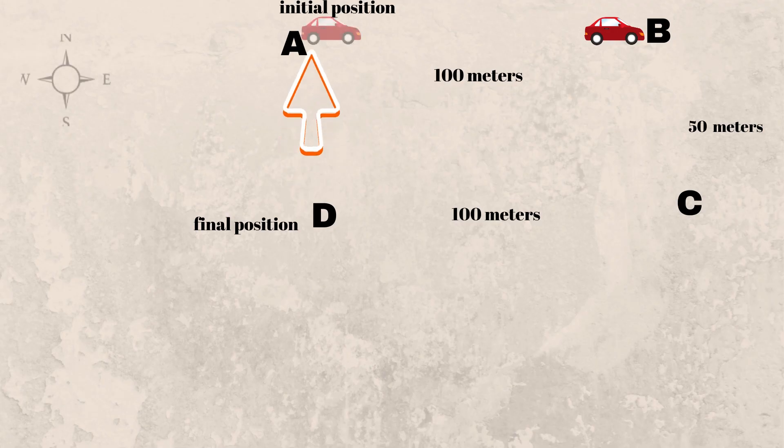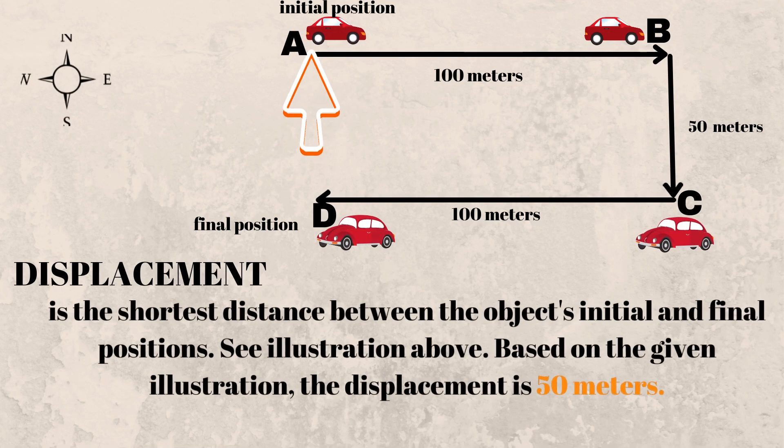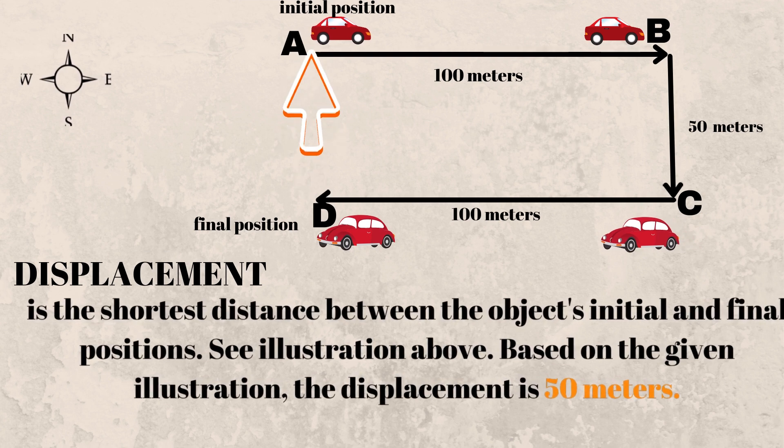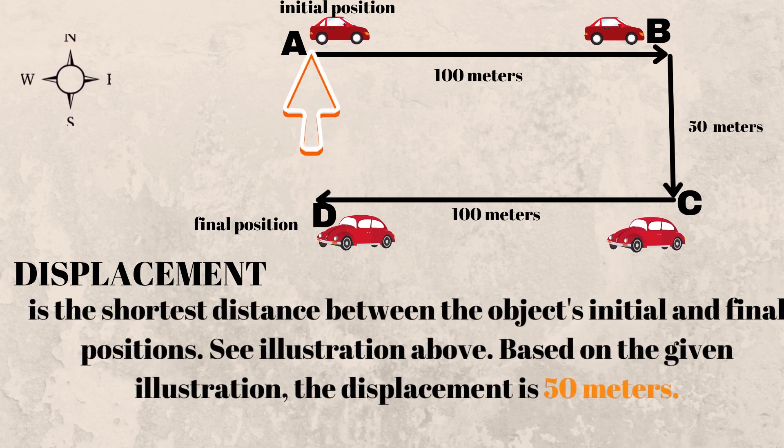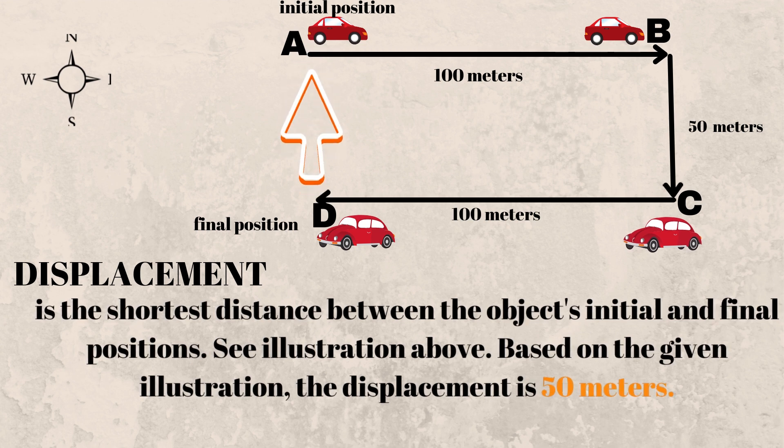Let's talk about displacement. Displacement is the shortest distance between the object's initial and final positions. See illustration above. Based on the given illustration, the displacement is 50 meters.